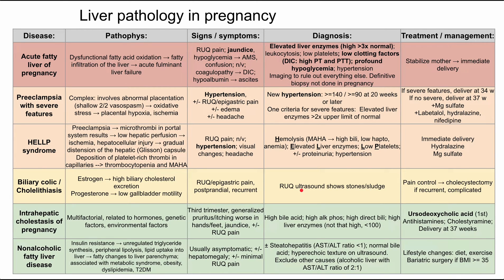Diagnostics can be imaging. Right upper quadrant ultrasound is usually used, which is good because CT would be bad for the baby. This would show stones or sludge blocking the gallbladder, with possible gallbladder inflammation. The treatment is pain control. Ideally you would manage the issue until delivery and do a cholecystectomy afterwards, but if it's recurrent and complicated during pregnancy, you can do the cholecystectomy while mom is pregnant.